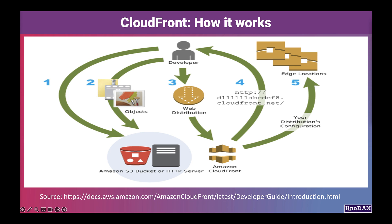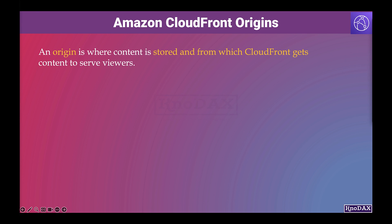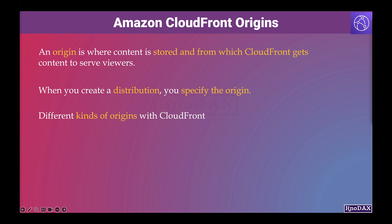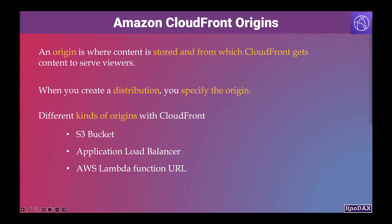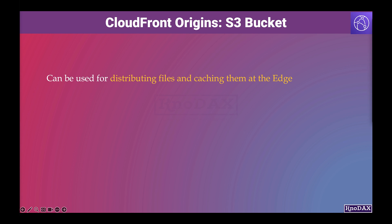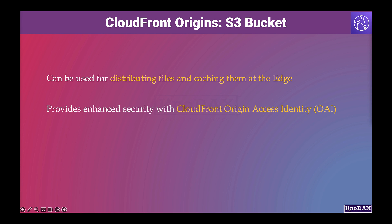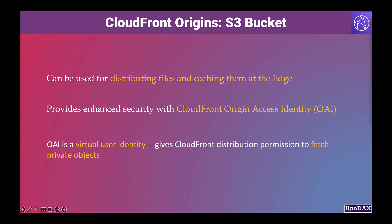CloudFront is AWS's CDN and uses edge locations to cache content to improve read performance. An origin is a location where content is stored and from which CloudFront gets content to serve viewers. When you create a distribution, you specify the origin where CloudFront sends requests for the files. You can use several different kinds of origins, such as an Amazon S3 bucket, an application load balancer, or an AWS Lambda function. S3 bucket is a very common origin source. Organizations can improve the read performance of their static contents, such as images and videos stored in S3, for global customers. There is also a concept of origin access identity, OAI, through which CloudFront provides enhanced security. The OAI is a virtual user identity used to give your CloudFront distribution permission to fetch a private object from your origin server, for example, contents in an S3 bucket.